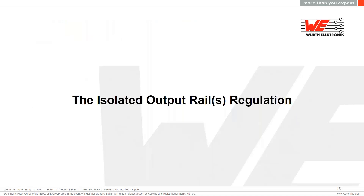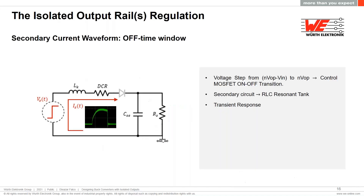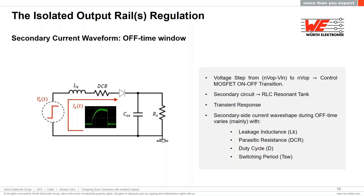Let's do some analysis about the isolated output rail, which is not directly regulated. The equivalent circuit of one of the secondary sides includes parasitics such as the leakage inductance of the transformer reflected to the secondary side, and the winding resistance. We have replaced the secondary winding by a voltage step source, giving us an RLC resonance circuit. When the control MOSFET turns off, the voltage across the windings changes polarity very fast, applying a voltage step to the secondary-side RLC circuit. The wave shape of the secondary winding current depends on several parameters — mainly the leakage inductance, winding resistance, and duration of the off-time window set by the duty cycle and switching period, making it complicated to find an accurate analytical expression.